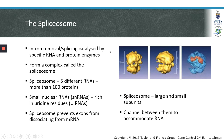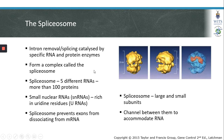The removal of introns is an enzyme-catalyzed process involving specific RNAs and proteins. These RNAs and proteins form a complex called the spliceosome. The spliceosome prevents dissociation of this complex and ensures that the correct introns are removed and exon-to-exon ester bonds are formed in the correct place. The spliceosome is made up of at least 5 different RNAs and more than 100 proteins.